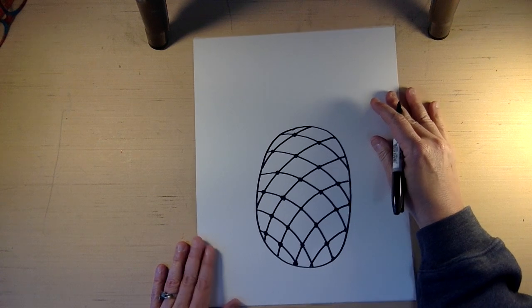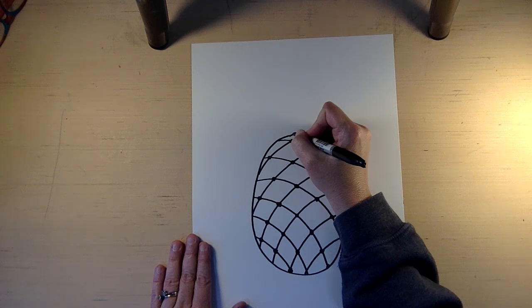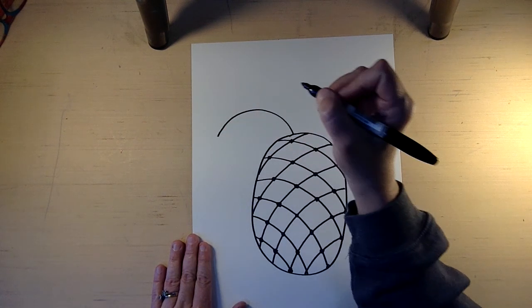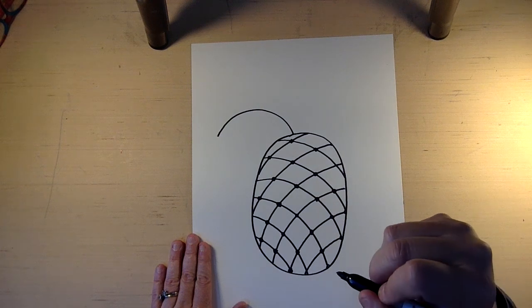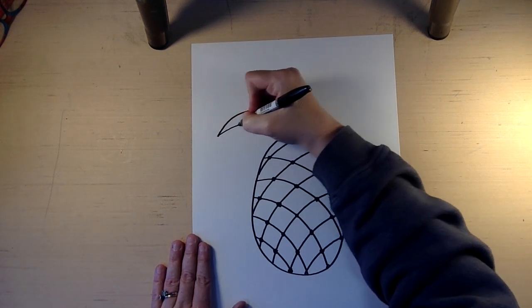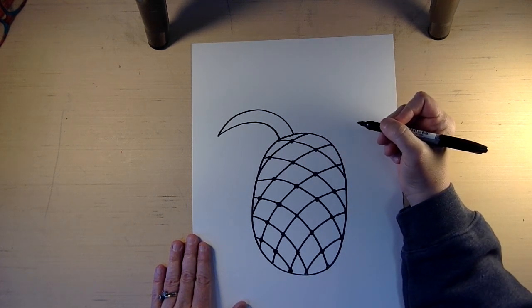So now we're going to do the leaves coming out of the top. We're going to go really big, just like that, like in a frown. And then we're going to come back and touch the top of the pineapple again.